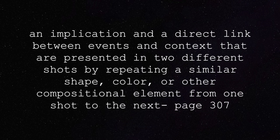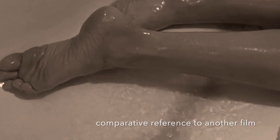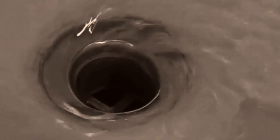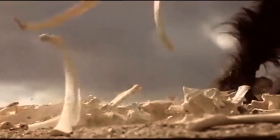Now let's talk about graphic match cuts. A graphic match cut is an implication and a direct link between events and context presented in two different shots by repeating a similar shape, color, or other compositional element from one shot to the next. For example, in Psycho, directed by Alfred Hitchcock from 1960, we see the scene in which the main character is killed and blood drains from where she was stabbed. The close-up into the drain emphasizes that her life is over, but it's the graphic match cut to her lifeless, unmoving eye that solidifies it.